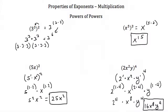So whenever you multiply two numbers that have exponents, you add the exponents, and whenever you have a power to a power, you multiply your exponents. That completes the tutorial on the multiplication properties of exponents.